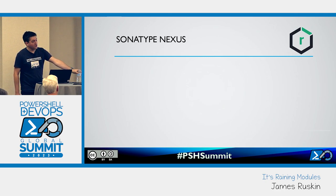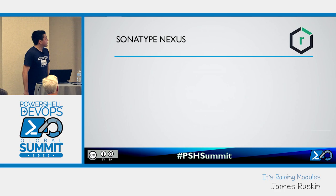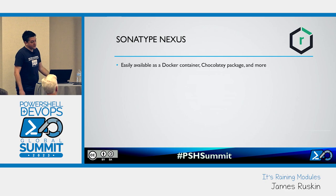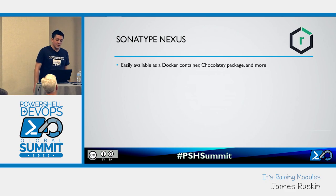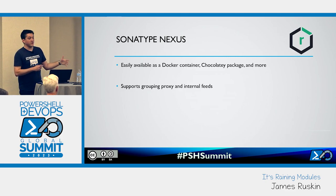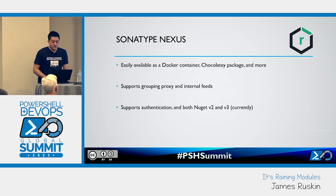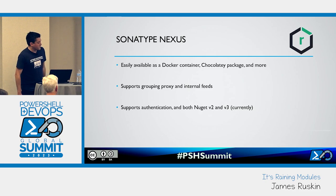Moving to things you actually have to host yourself, we've got Sonatype Nexus, and similarly Artifactory. Nexus is super easy to deploy with lots of different options, and it supports interesting things like a proxy feed that allows you to cache packages from an existing online repository — for example, PowerShell Gallery — combined with internal feeds. That solves the dependency issue mentioned earlier. It's also got excellent support for authentication and supports both NuGet v2 and v3, though with some mild caveats.